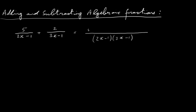So what we end up doing is writing down the 5 and then multiplying by 3x minus 1. This fraction here is exactly the same as this fraction here — all I've done is multiply the numerator by 3x minus 1 and the denominator by 3x minus 1, multiplying the top and bottom by the same thing. For instance, 2 thirds with top and bottom multiplied by 3 gives 6 over 9 — those two fractions are equal.